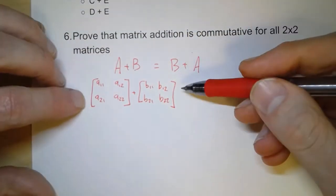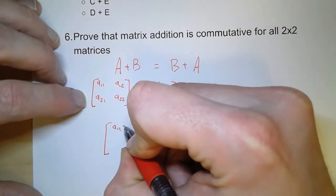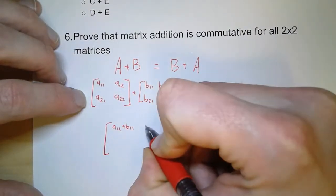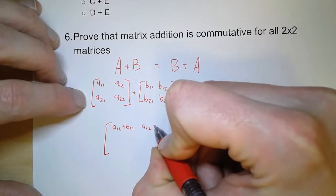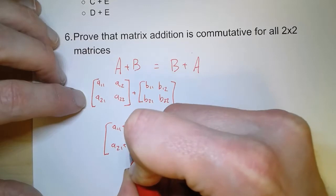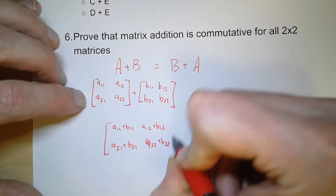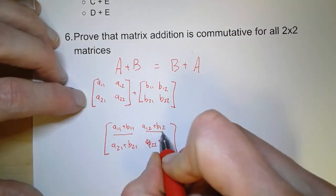Now these are both two by two. So when I add them together, I get A11 plus B11, A12 plus B12, A21 plus B21, and A22 plus B22. And again, these are all quantities.